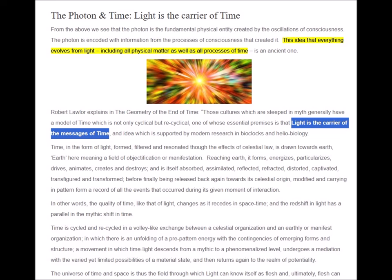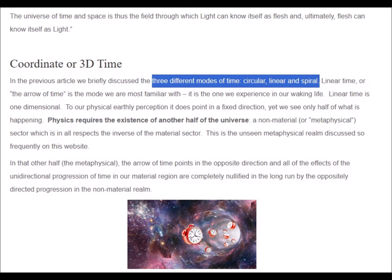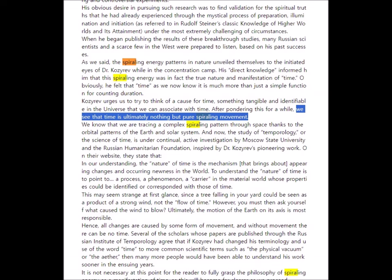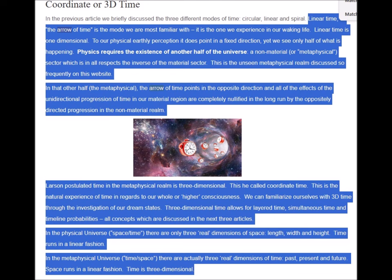Light is the carrier of the messages of time, and also time is not a single dimension but rather has three dimensions. The three modes of time include the circular, linear, and spiral flows, the latter in particular being reminiscent of Kozyrev's concepts of time. The article further states that linear time, or the arrow of time, is the mode we are most familiar with. It is the one we experience in our waking life. It is one-dimensional to our physical earthly perception. It does point in a fixed direction, yet we only see half of what is happening.